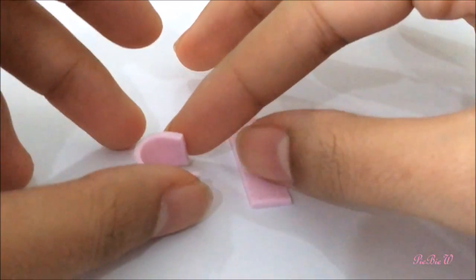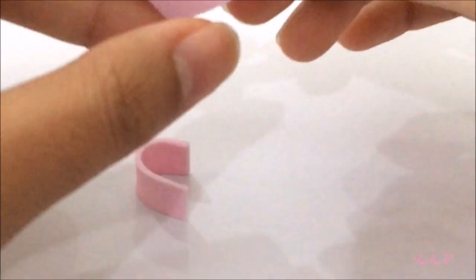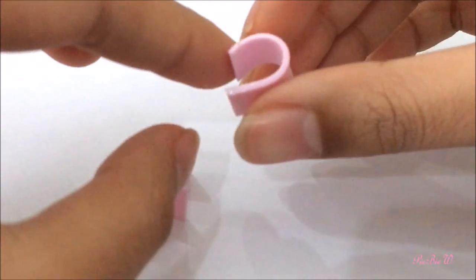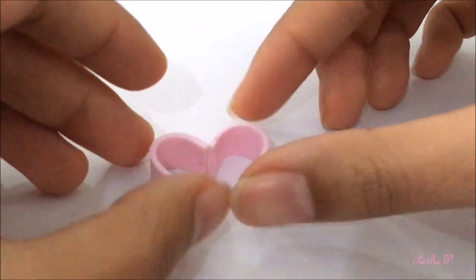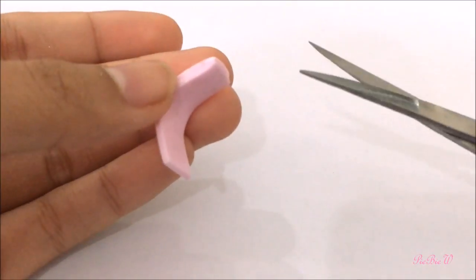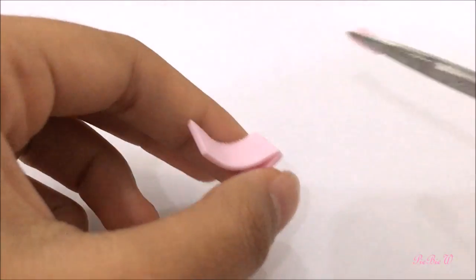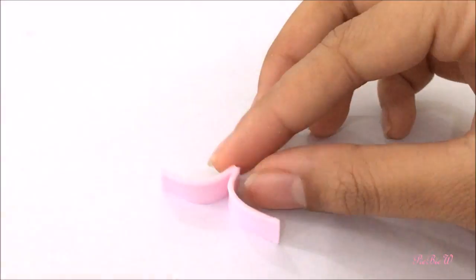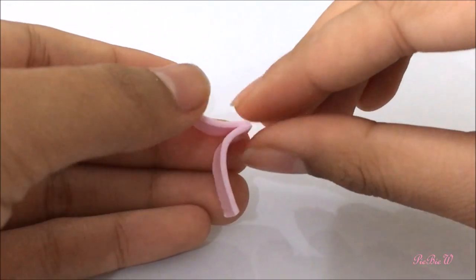So then we're going to shape the two strips into C shapes and take the inner edges and pinch them together. Cut out the extra clay with scissors or your X-Acto knife and pinch it and blend it in.